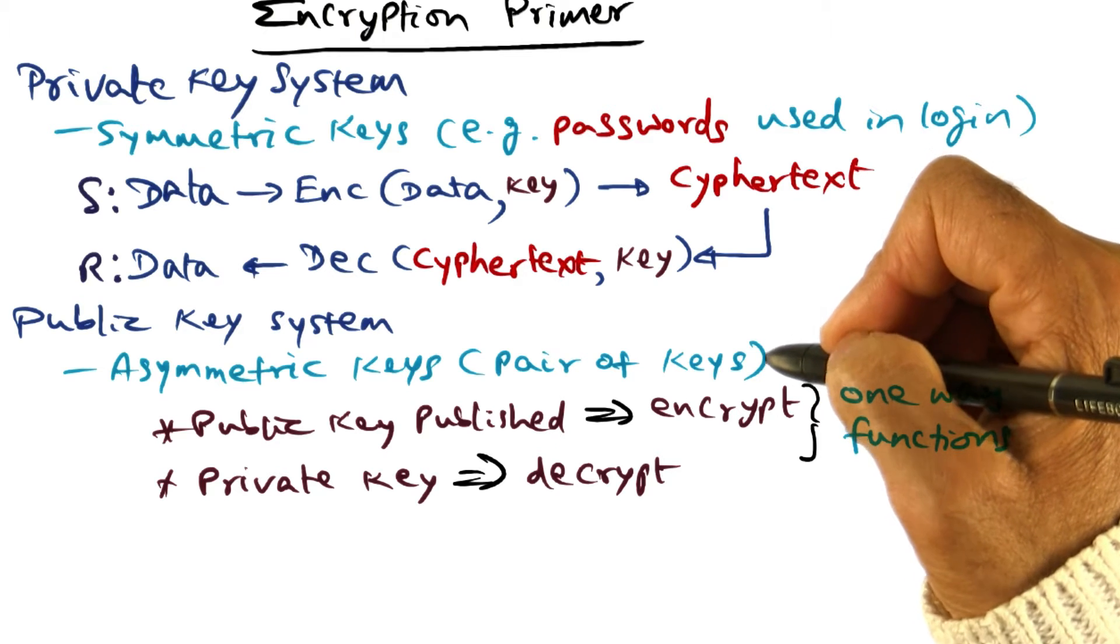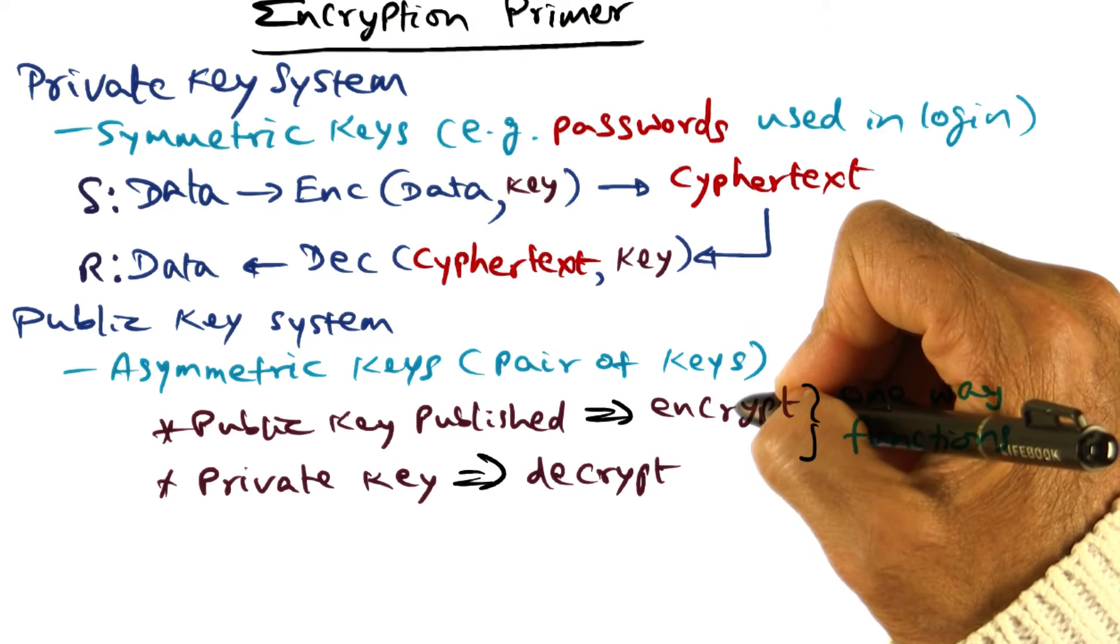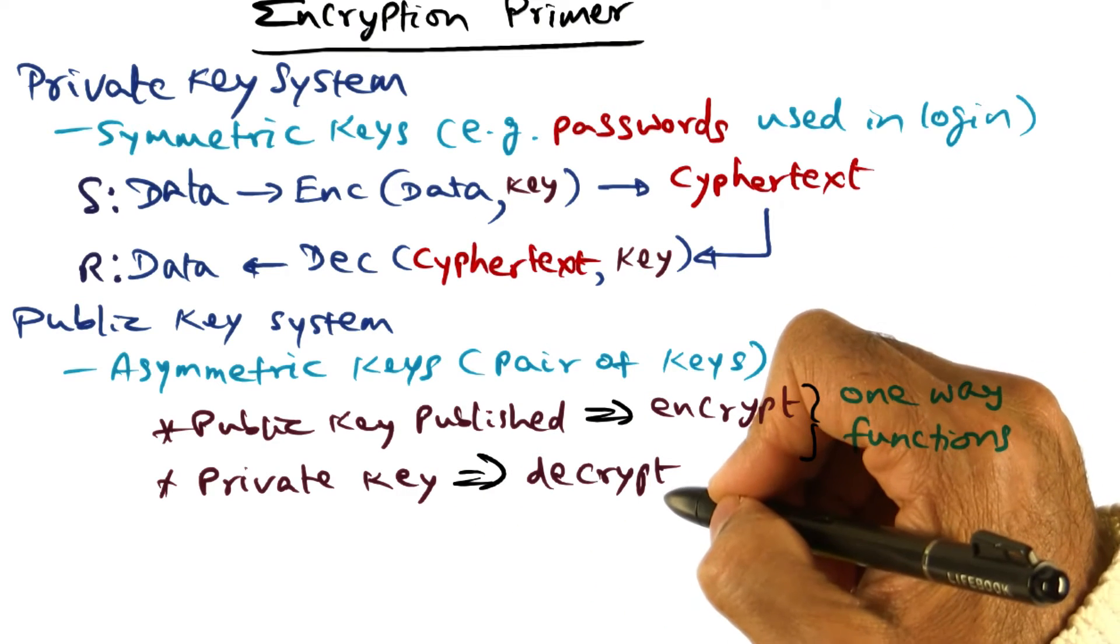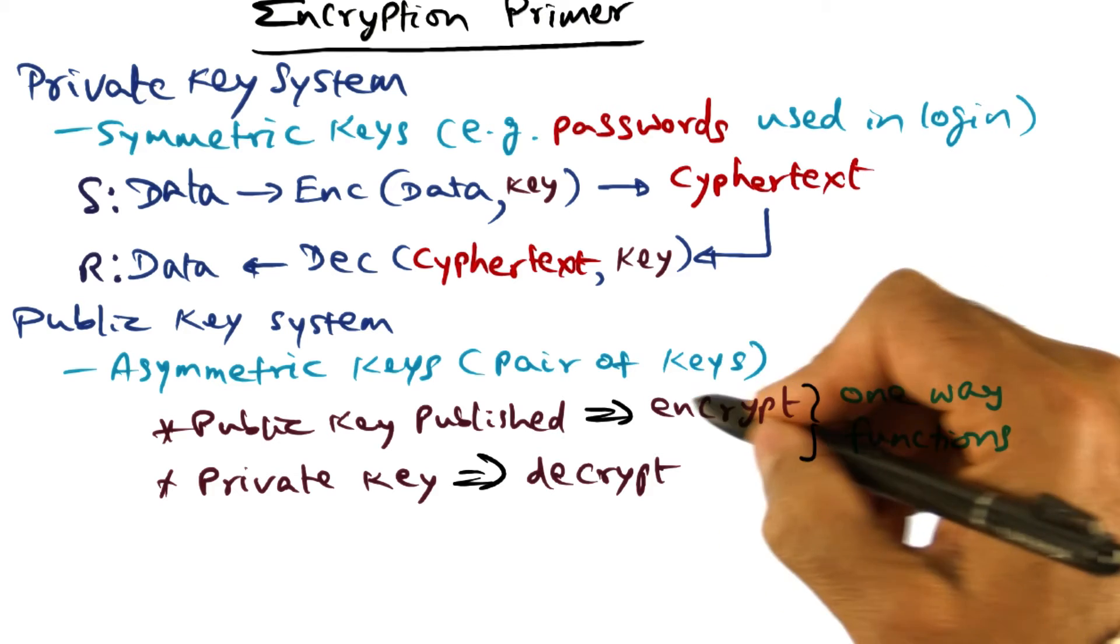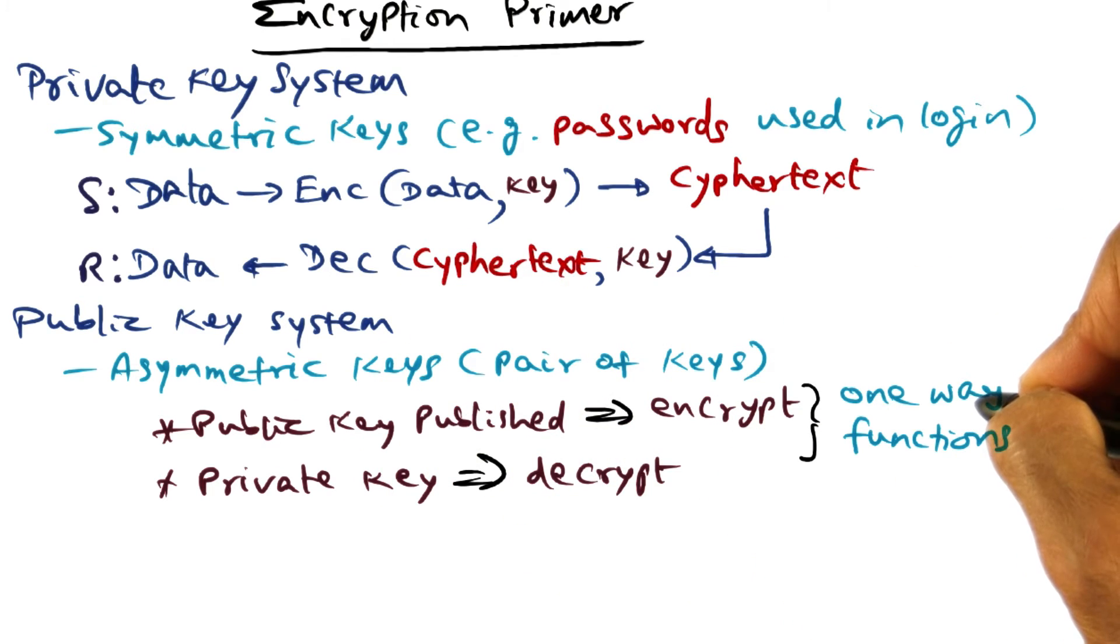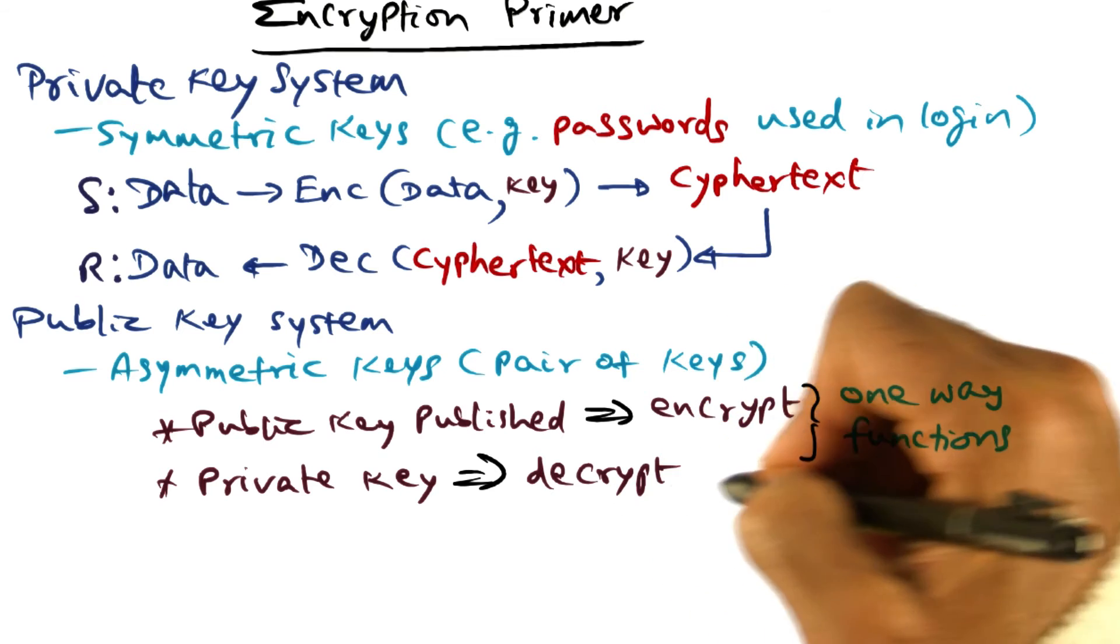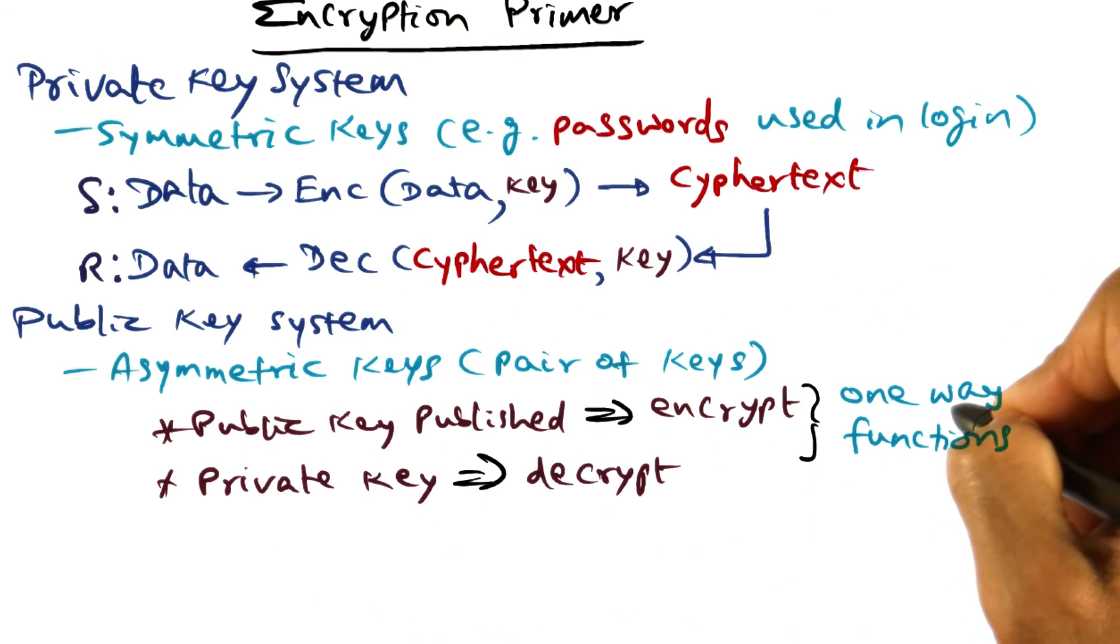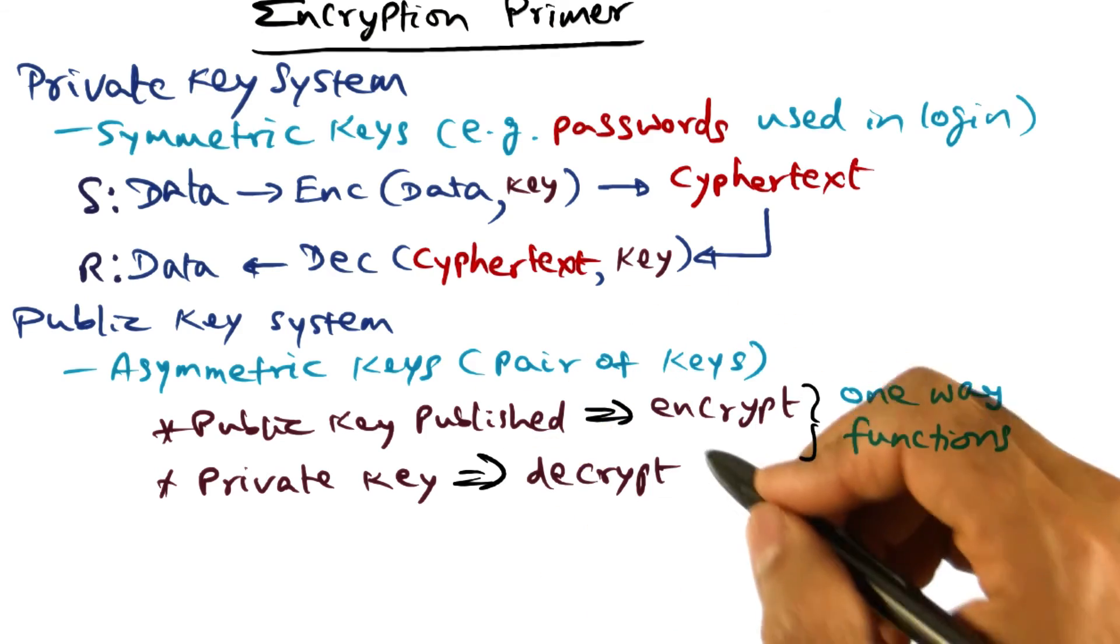In order to encrypt, you use a key that is a public key. Anybody can have access to that. But in order to decrypt that, you need a private key. Conversion of data into a ciphertext using the public key is a one-way function, which is not reversible. Similarly, converting the encrypted message into the original data using the private key is another one-way function. So one-way functions are the mathematical basis for the public key cryptosystem.